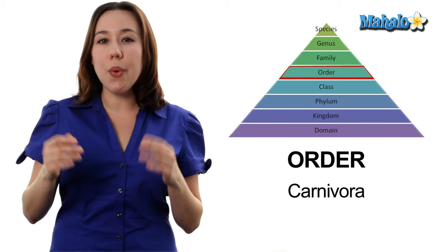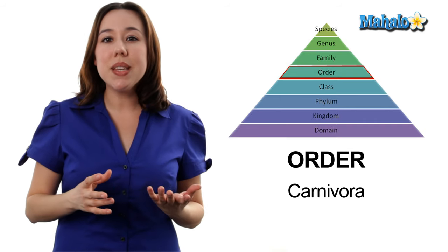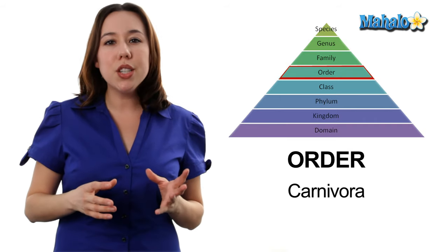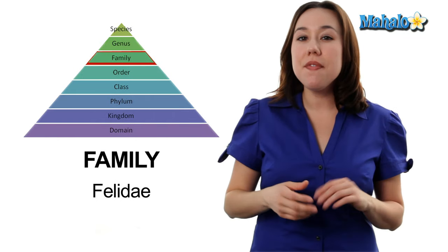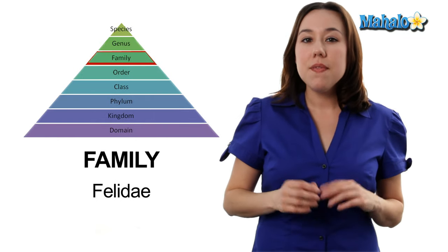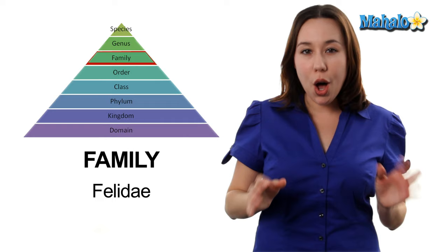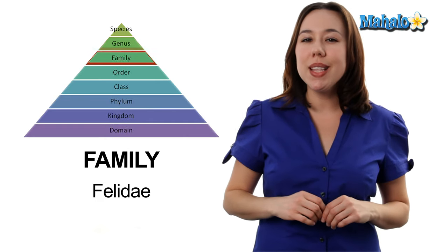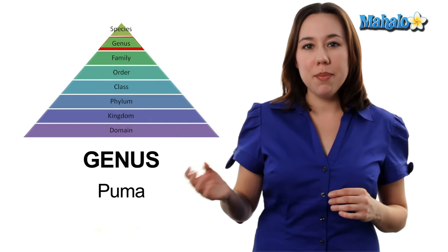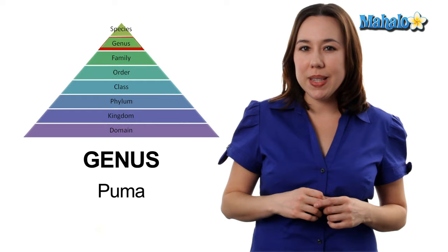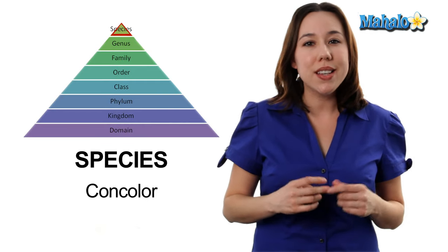Next, we're going to have order. The order is Carnivora. This means that our mountain lions belong to an order of all carnivores. Next, we have family — family Felidae. Family Felidae is going to be all big cats. Next on the list is genus. Genus is the Puma part of their scientific name. And of course, last is the species: concolor.